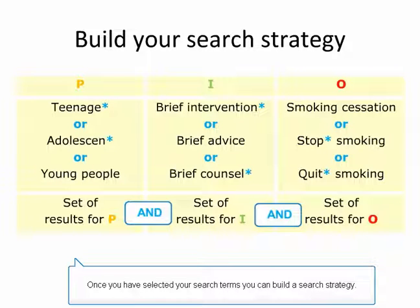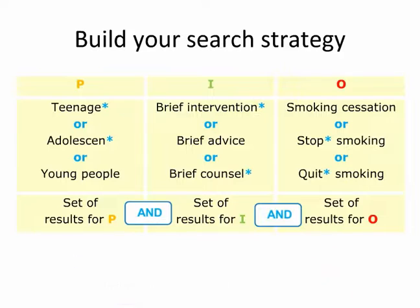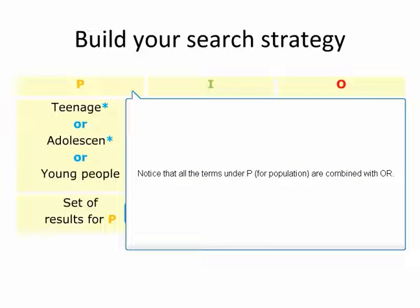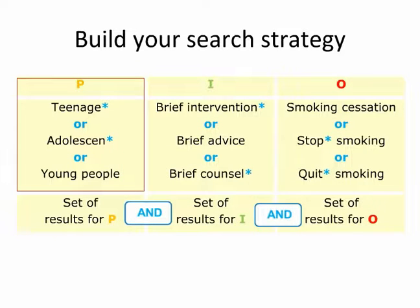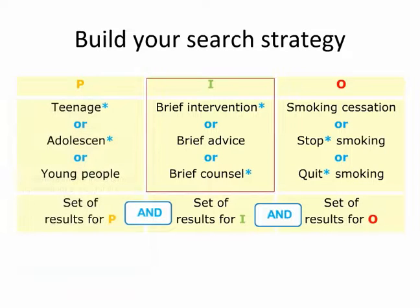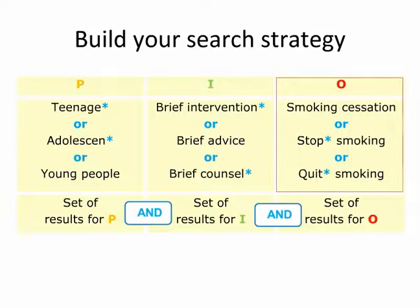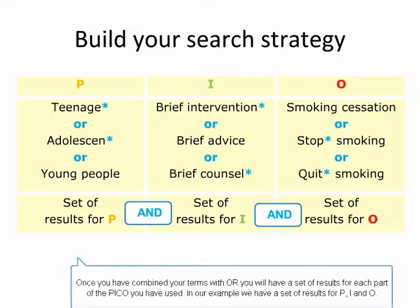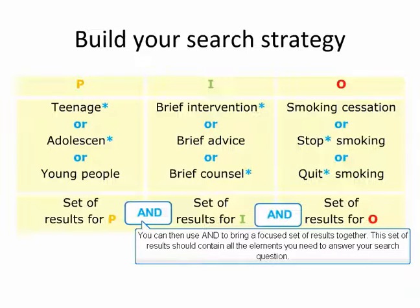Once you have selected your search terms, you can build a search strategy. Notice that all the terms under P for population are combined with OR. The same is true for those under I for intervention and O for outcome. Once you have combined your terms with OR, you will have a set of results for each part of the PICO you have used — in our example, sets for P, I, and O. You can then use AND to bring a focused set of results together. This set of results should contain all the elements you need to answer your search question.